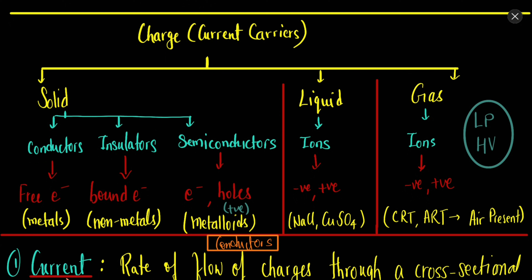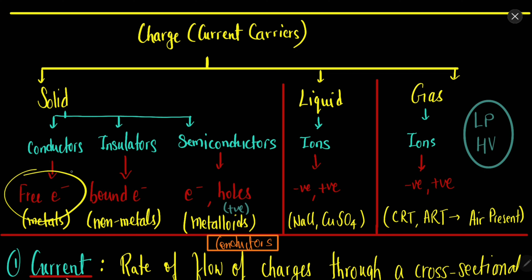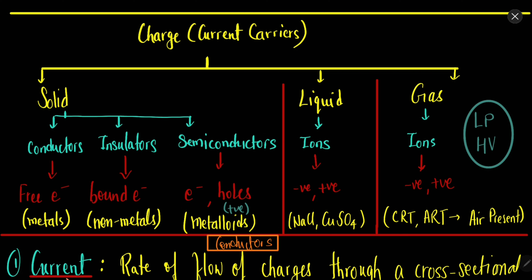Let's first try to understand the different charge carriers in different materials. In solids there are three types of materials: conductors, insulators, and semiconductors. Superconductors are special types of conductors. Conductors are materials having free electrons. Insulators have bound electrons — electrons which are bounded to their atoms. In semiconductors we have two types of particles: electrons and holes, which are considered to be positive particles.